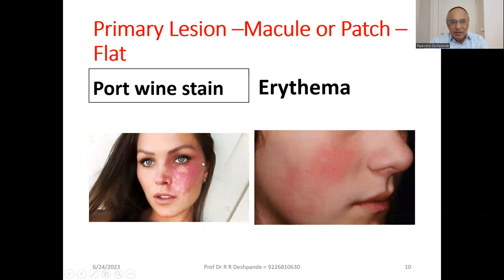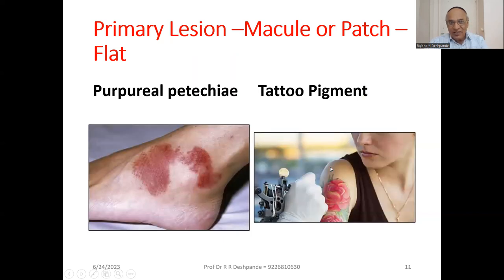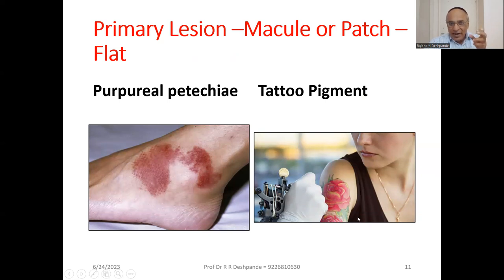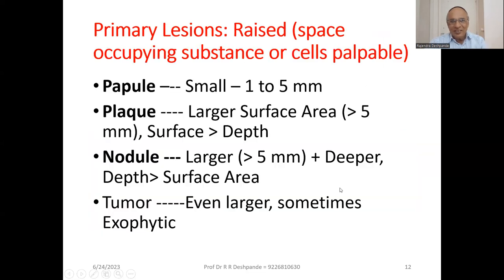What is purpura/petechiae? It is extravasation of RBCs from the blood vessel. And here you can see a tattoo — this is also a flat lesion.